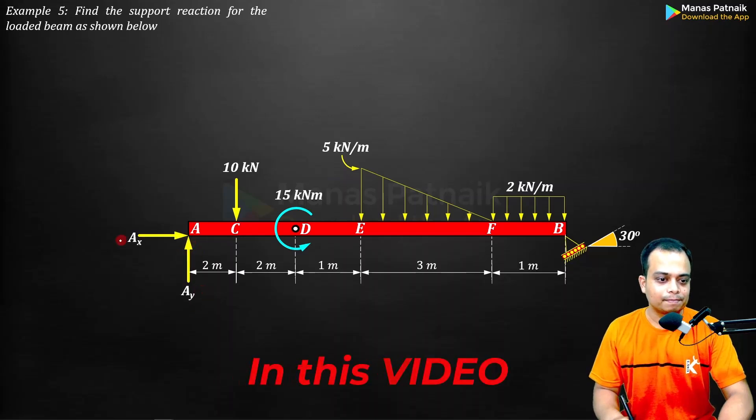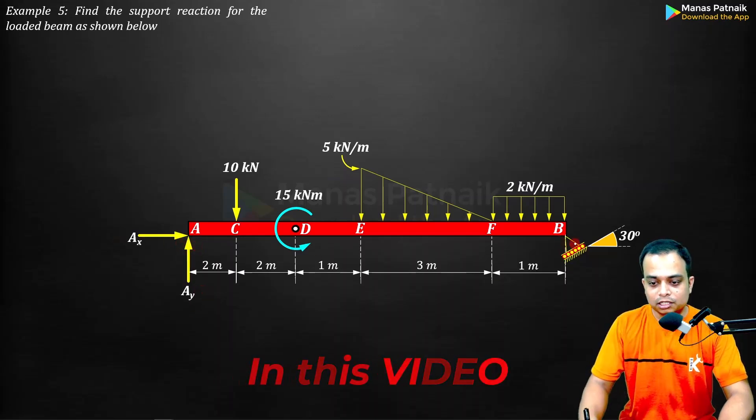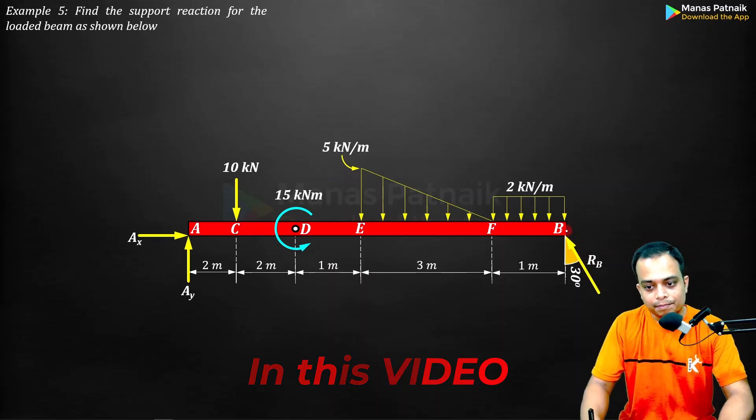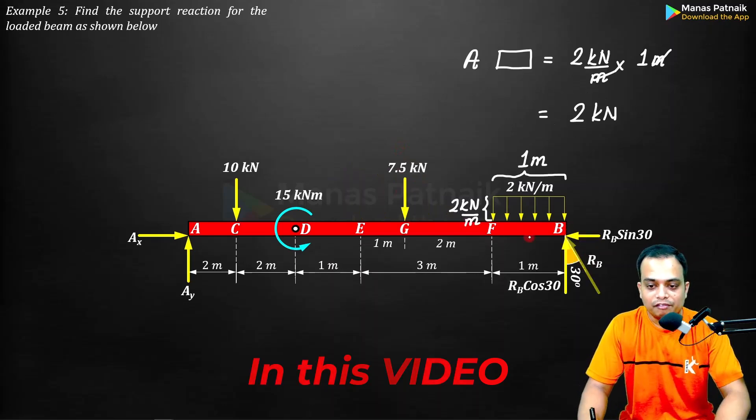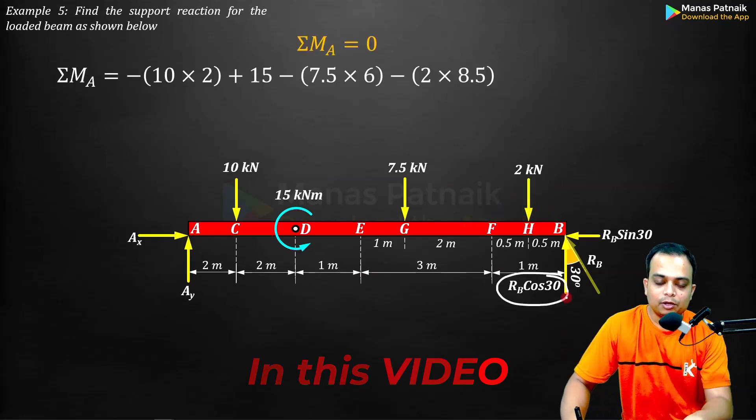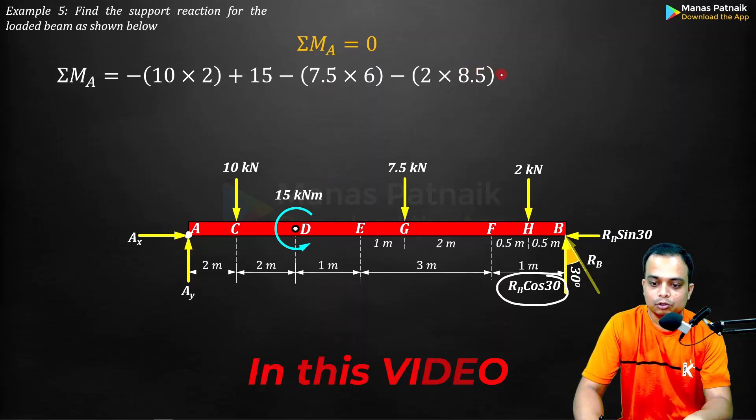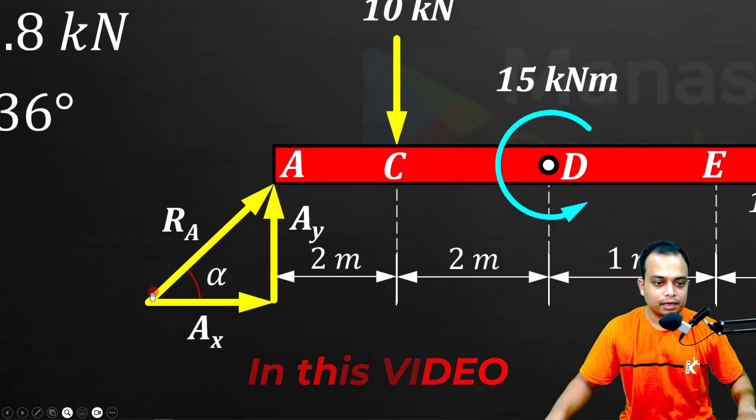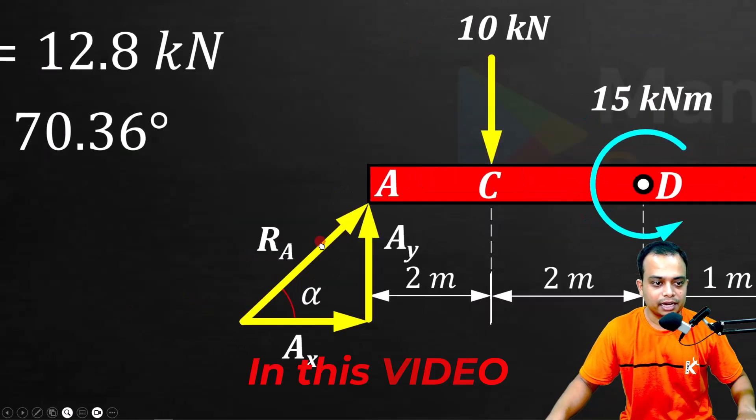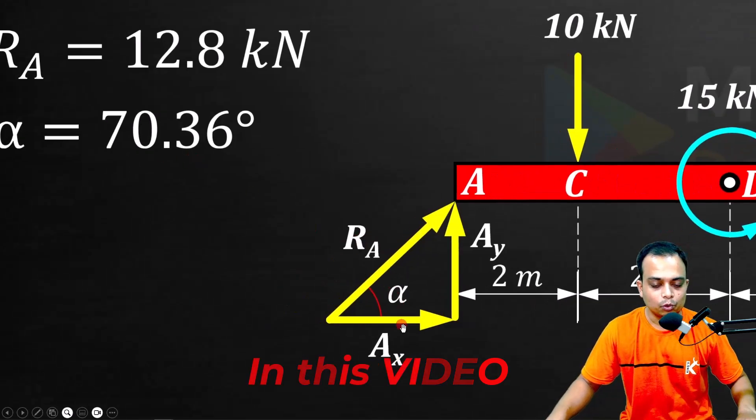The roller support can be replaced with a reaction RB. Let me do that. Half distance either from F or from B, let me have it over here. RB cos 30 is creating an anti-clockwise moment at A, that's why a positive sign. So plus RB cos 30 multiplied by the entire beam span that is AB. And that's the result, it is making an angle of 70.36 with the horizontal.